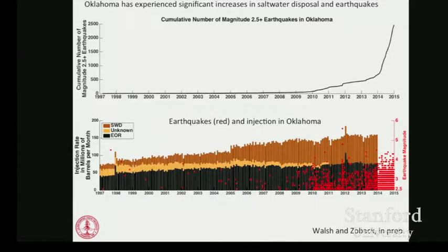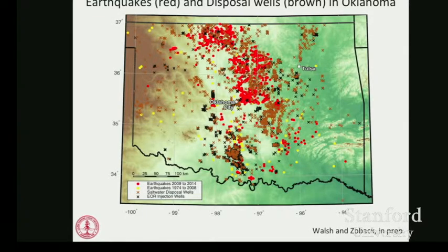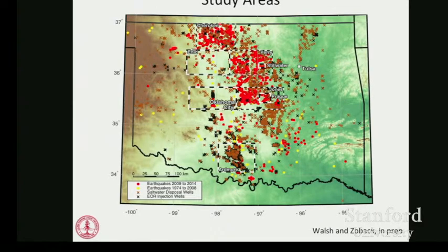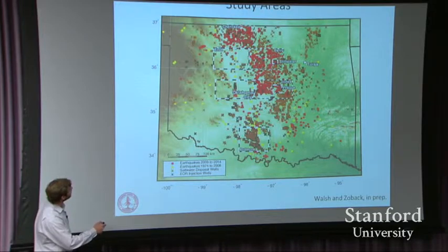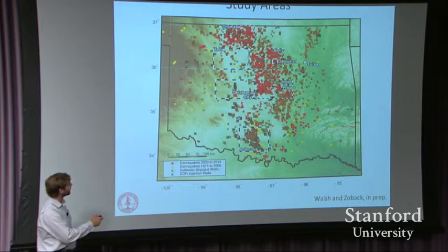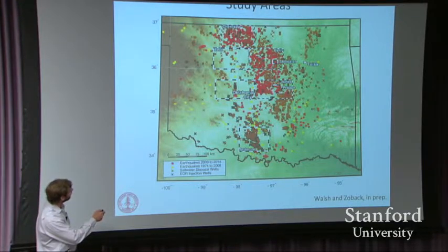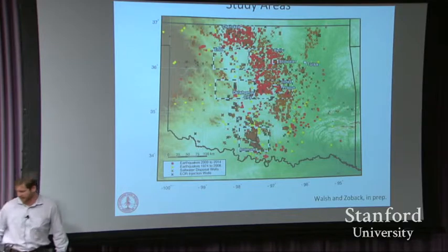Going back to the map to see where these earthquakes and wells are: brown dots are saltwater disposal wells, black dots are enhanced oil recovery wells. Historical earthquakes are yellow dots and recent earthquakes are red dots. The historical earthquakes are broadly distributed, while the recent earthquakes cluster in several areas. We've picked out some clusters — comparing an area like Cherokee, with lots of earthquakes, to adjacent areas without very many. Three areas — Cherokee, Perry, and Jones — encompass about 72% of Oklahoma's recent earthquakes.